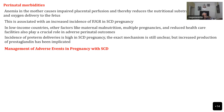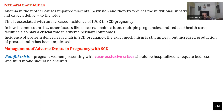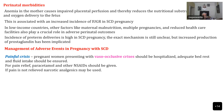How do you manage adverse events in pregnancy in patients with sickle cell disease? There are six things to manage. First is the painful crisis. Pregnant women who develop vasoocclusive crisis should be hospitalized, given adequate bed rest, and fluid intake monitored with adequate hydration ensured. For pain relief, you can use paracetamol and other NSAIDs. If pain is not relieved, you can use narcotics, but pethidine should be avoided because of associated toxicity and risk of convulsions.